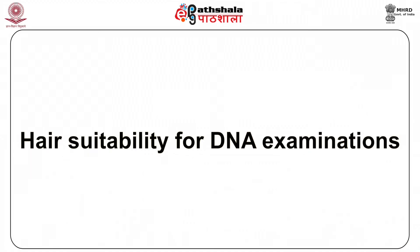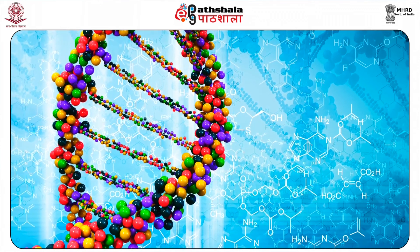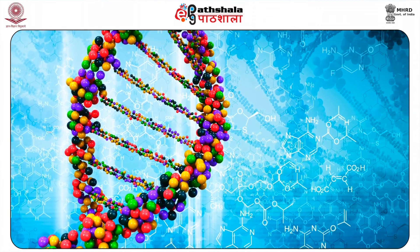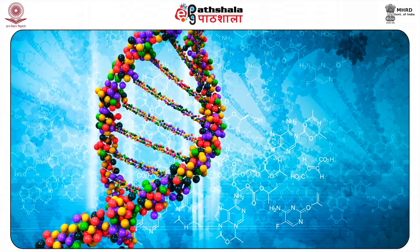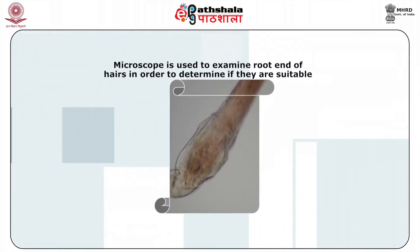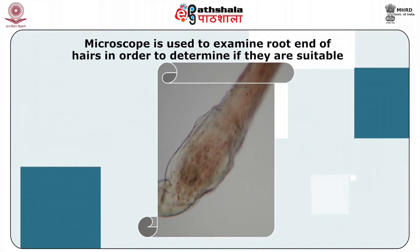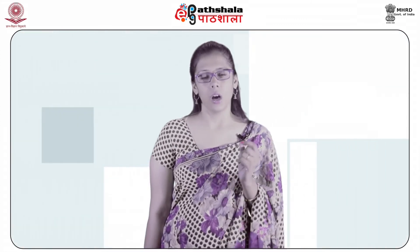Nuclear DNA analysis can be done on human hairs. The trace section assists the DNA section by screening hairs and determining their suitability for DNA testing. A microscope is used to examine the root end of the hairs in order to determine if they are suitable. If a hair is deemed not suitable for nuclear DNA analysis due to the number of roots present or because no tissue is attached, it can be sent for mitochondrial DNA testing. A root does not have to be present for mitochondrial DNA testing.